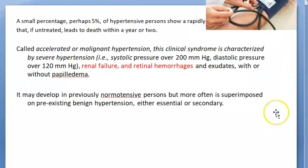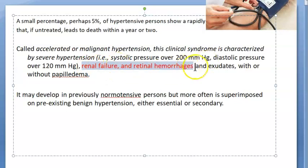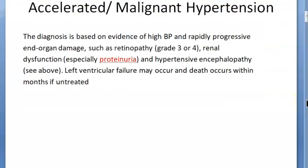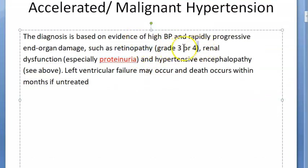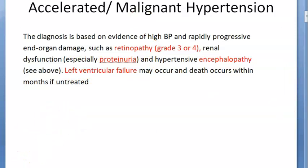Basically, some people who have hypertension will experience their systolic and diastolic pressures suddenly and rapidly increasing. This can lead to renal failure and retinal hemorrhage — remember, the kidney and eyes are affected. Because of this retinal problem, they will have retinopathy which is grade 3 or grade 4, proteinuria indicating kidney involvement, hypertensive encephalopathy, and left ventricular failure may also occur if it is not treated.